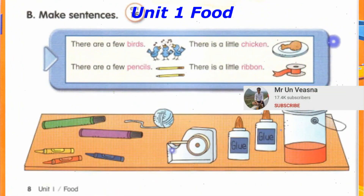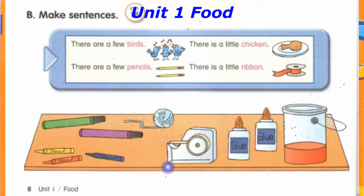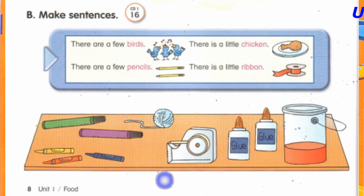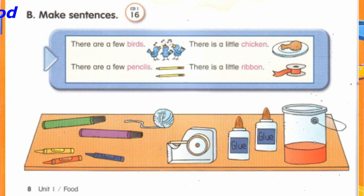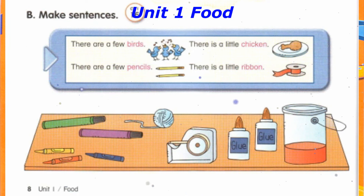Track 16. B. Make sentences. There are a few birds. There is a little chicken. There are a few pencils. There is a little ribbon.